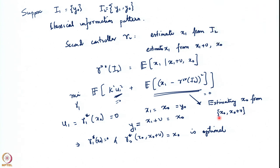When the information structure is classical, the first controller does not have to worry about what the second controller ought to know — he does not have to choose its actions in order to influence the information of the second controller. I had called this the dual effect. Here there is no dual effect because x0 is already available. What the first controller does does not affect the information of the second controller, and as a result the first controller can plan such that the second controller's error becomes 0 and simultaneously his stage-wise cost also becomes 0.